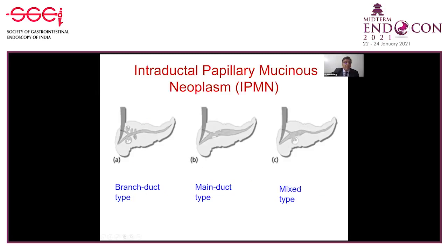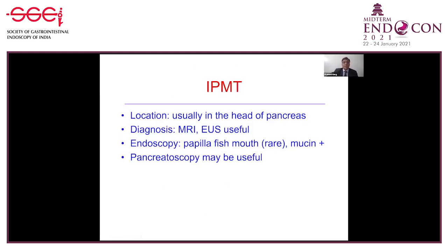This is a branch duct IPMN arising from a side branch. This is a main duct IPMN — the main duct is dilated, filled with mucin. This is a mixed type with a branch duct IPMN communicating with the dilated mucin-filled main duct. IPMN are typically located in the head of pancreas but can be seen in body and tail. For diagnosis, MRI and EUS are very useful. On endoscopy you may sometimes see a fish mouth appearance of the papilla, or mucin extruded from the papillary orifice.